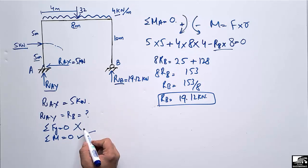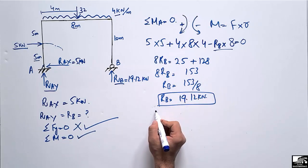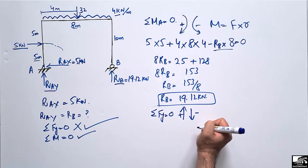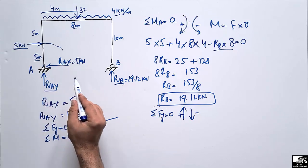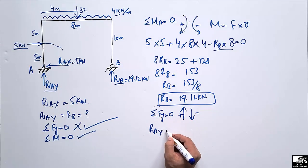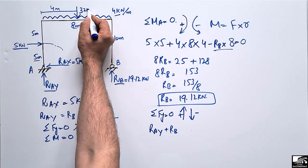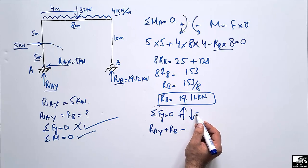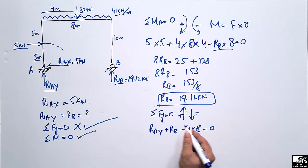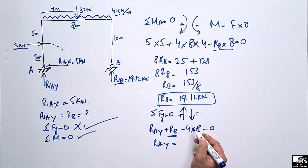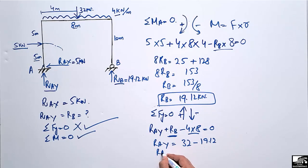Now we find RAy using the summation of vertical forces equal to zero. Taking upward forces as positive: RAy + RB − 4 × 8 = 0. Since RB = 19.12 kN and the total UDL = 32 kN, we get RAy = 32 − 19.12 = 12.88 kN.